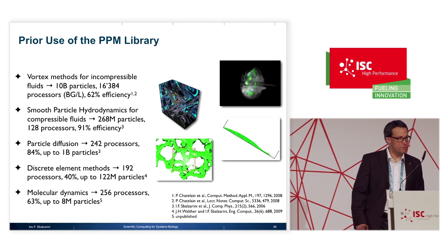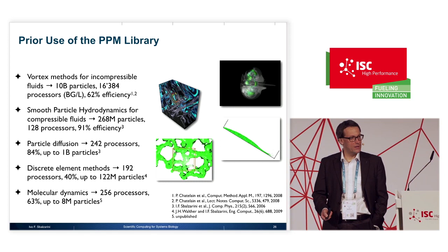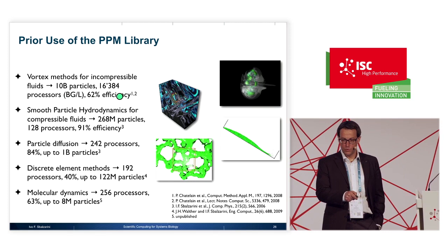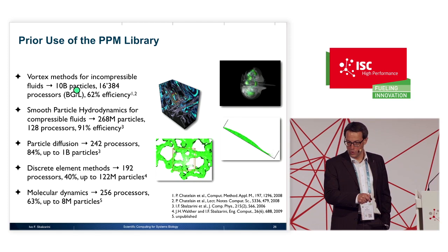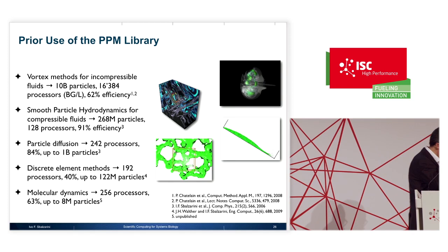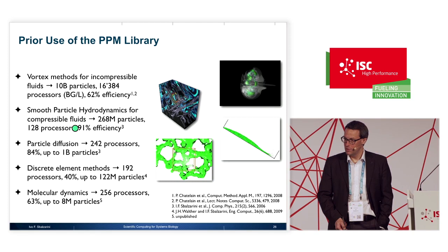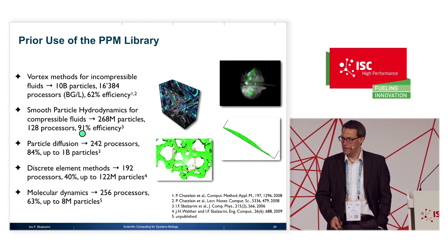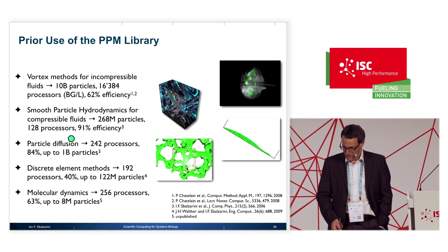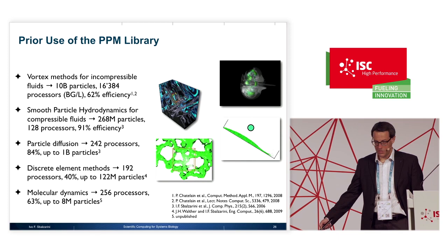PPM was used by us and others to do some remarkable simulations. A vortex method for incompressible fluid mechanics with 10 billion unknowns on 16,000 processors of an IBM Blue Gene/L was at that time the largest particle simulation ever done. A smooth particle hydrodynamic simulation of astrophysics reached 91% parallel efficiency, comparable to what the Max Planck Institute for Astrophysics SPH code achieves — which was developed over many years by a team of experts — but this PPM client was developed by a first-year undergrad as part of a lecture exercise. We also implemented a discrete element method simulating an avalanche of grains down an inclined plane, which a colleague and I together implemented in one day.